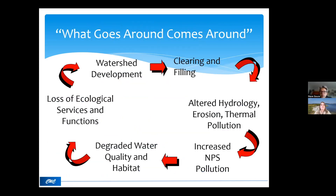It's a simple way to look at this — just like what goes around comes around. Something as simple as minor watershed development that leads to clearing and filling creates an alteration of the hydrology and hydraulics of our system, an increase in pollutant loading, and the combination of all of that leads to degraded water quality and habitat. That in turn results in measurable losses of ecological services and functions, and we have seen this repeatedly in the streams and rivers that drain to Barnegat Bay.